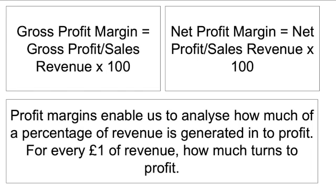Now the margins. Gross profit is simply revenue minus cost of sales — costs directly based on outputs. Net profit is gross profit minus expenses, i.e. your fixed costs. To work out your margins, we're trying to analyse what percentage of revenue is generated into profit — for every £1 of revenue, how much turns into profit. For gross profit margin: gross profit divided by sales revenue, times by 100. For net profit margin: net profit divided by sales revenue, times by 100.